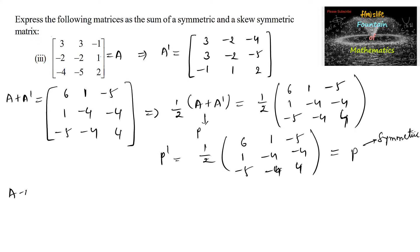Now consider A minus A transpose, subtracting the two matrices: 3-3=0, 3-(-2)=5, -1-(-4)=3; -2-3=-5, -2-(-2)=0, 1-(-5)=6; -4-(-1)=-3, -5-1=-6, 2-2=0. So A minus A transpose equals [0,5,3; -5,0,6; -3,-6,0].